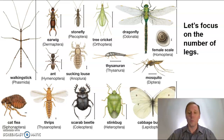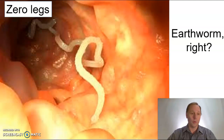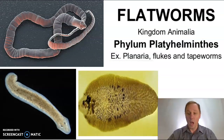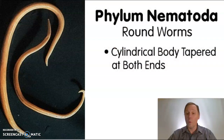All right, so let's start with zero legs. If you have zero legs, you might think earthworm — but no. That's actually a tapeworm in its own phylum, platyhelminthes. And those worms crawling out there? Those are roundworms, which have their own phylum called nematoda.